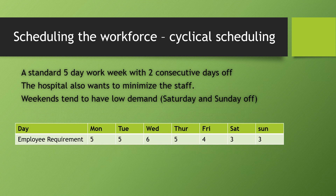The scheduling criteria are: a standard five-day work week with two consecutive days off for each doctor, and the hospital aims to minimize staff. Since weekends tend to have low demand, we can try to give Saturday and Sunday off to doctors as a first preference. We also need to analyze and minimize the total number of doctors needed.